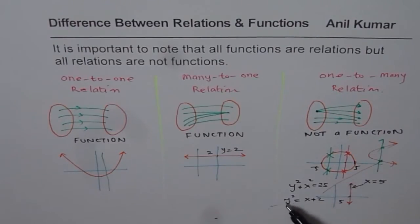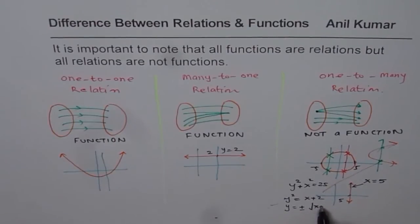And, in equations, if you have y square equals to something, then y will be square root, you could say, y equals to plus minus square root of x plus 2. And, that plus and minus results into two values of y for a value of x. And, therefore, this relation is not a function.